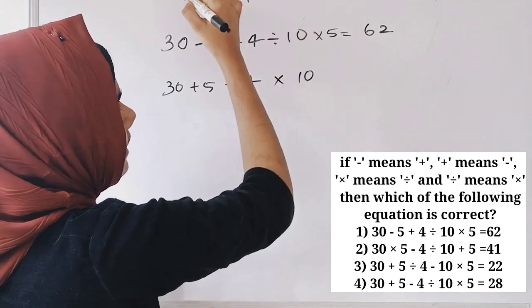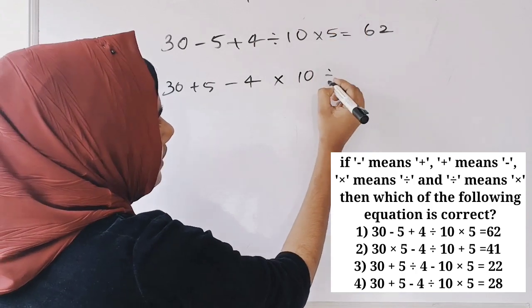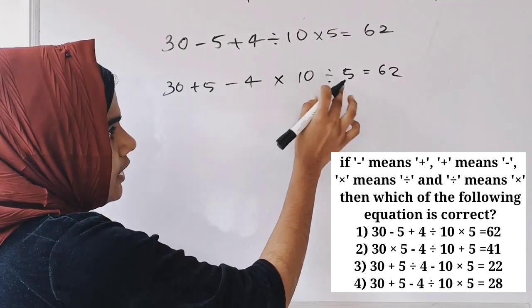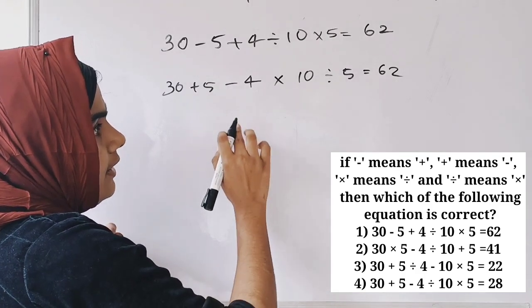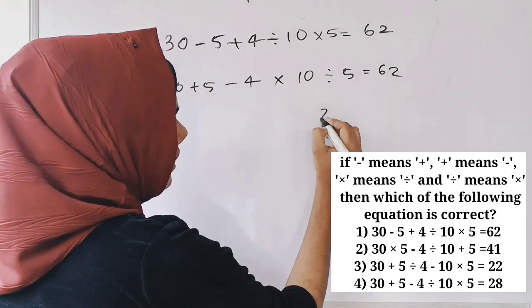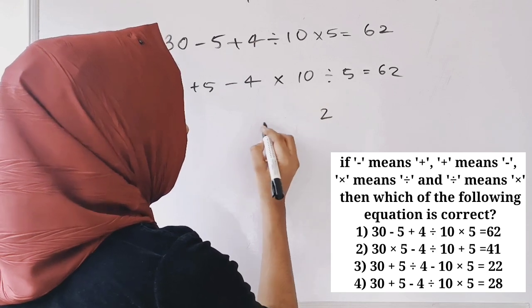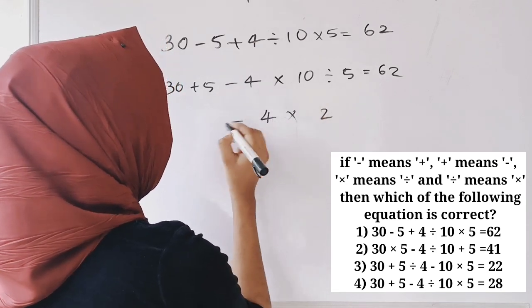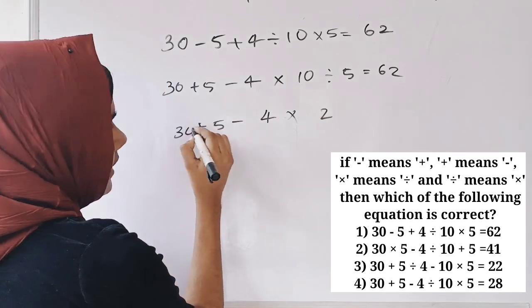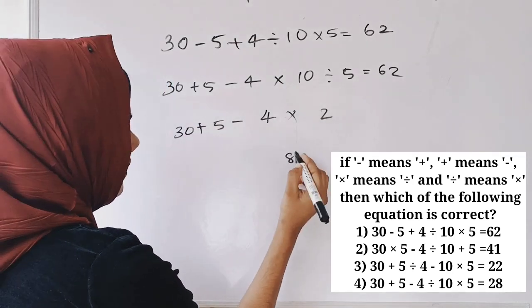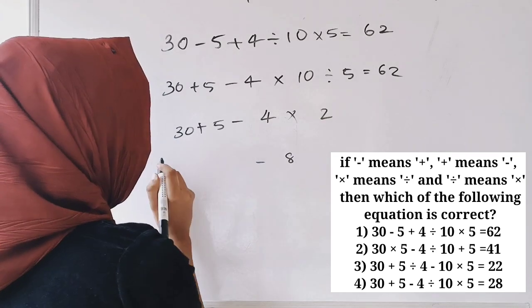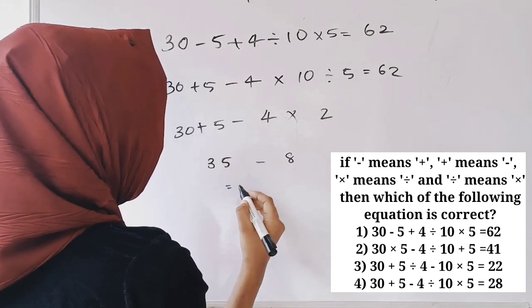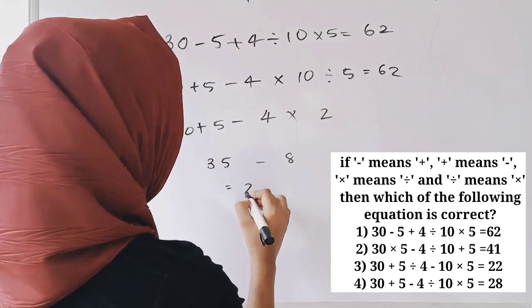Working through the calculation: 10 divided by 5 gives 2. Then 2 into 4 is 8. Also, 4 into 2 is 8. Then 30 plus 5 is 35, and 35 minus 8 is 27.